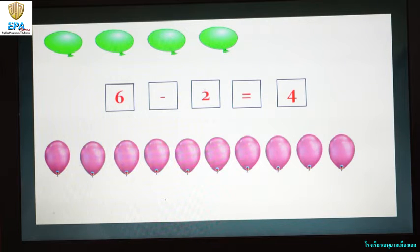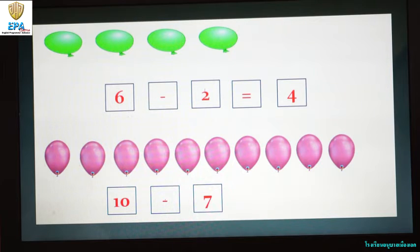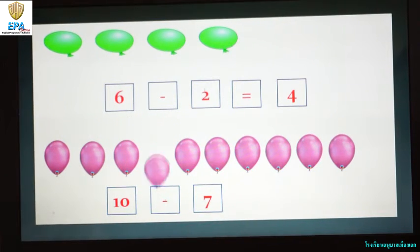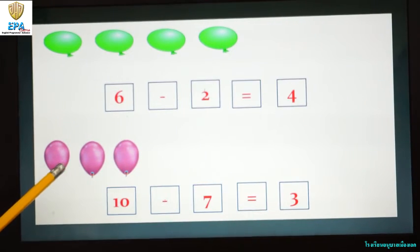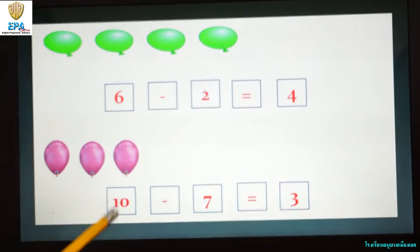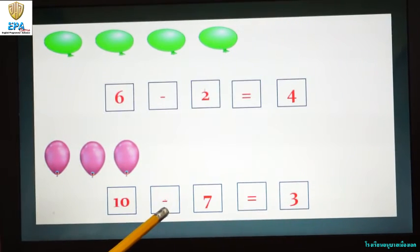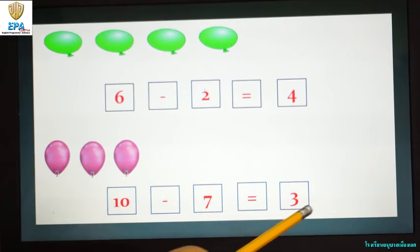Next, I have here ten pink balloons. I will give seven balloons to Teacher Job. How many do I have left? Very good, three. Let's count: one, two, three. So ten minus seven equals three.